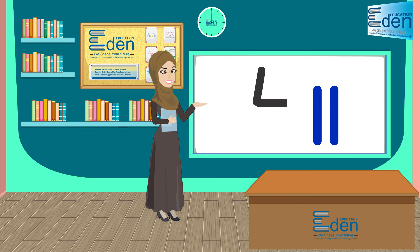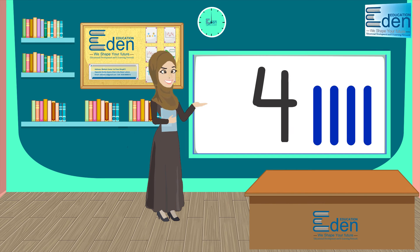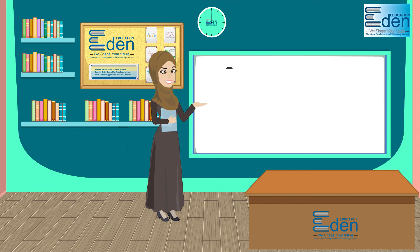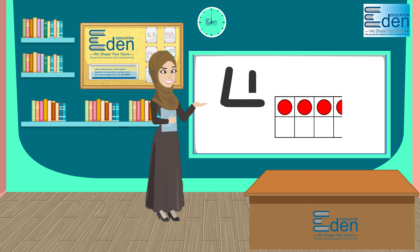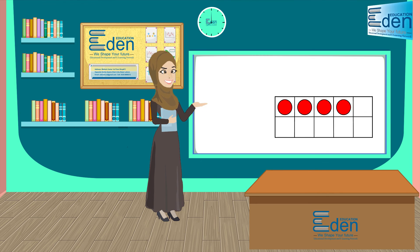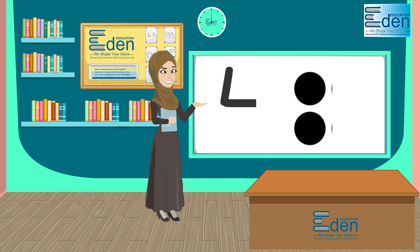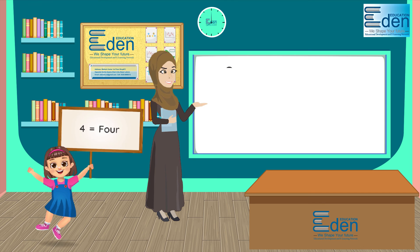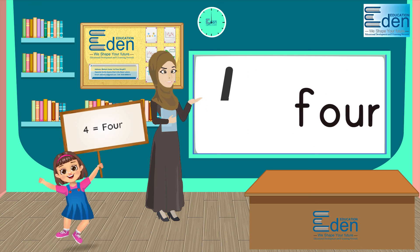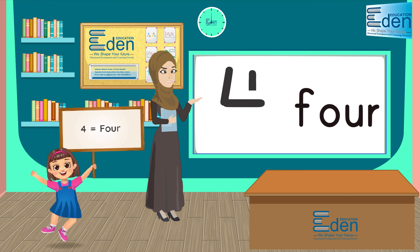I see four tally marks. I see four counters in the ten frame. I see four dots. I see the number and the number word.